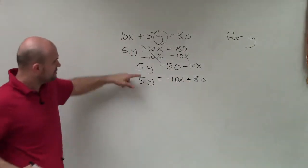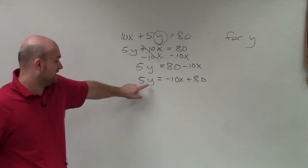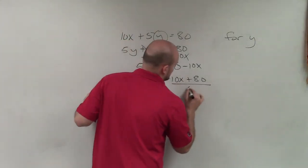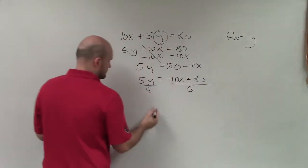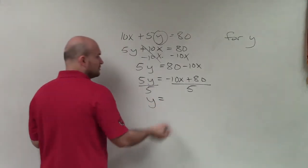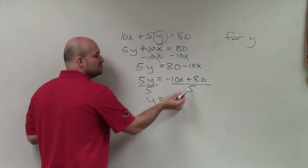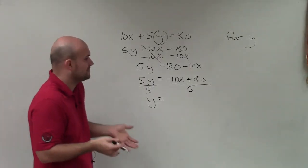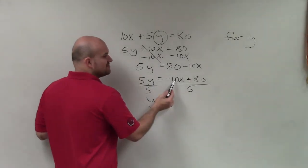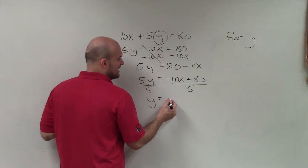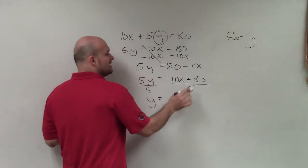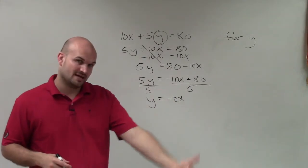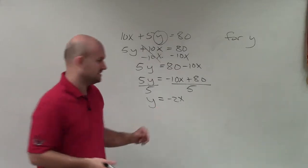Now all I need to do is undo the multiplication of y, so I'll divide by 5. Therefore y equals — and again, this 5 divides into both of these terms, and it's very important for us to understand that. So 5 divides into negative 10x negative 2x times, and 5 divides into 80 — well, 5 divides into 40 eight times, so double that would be 16.